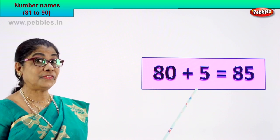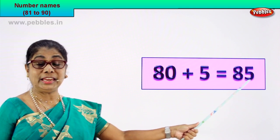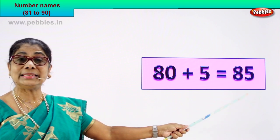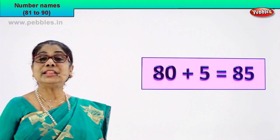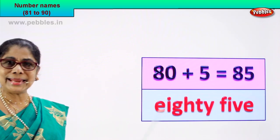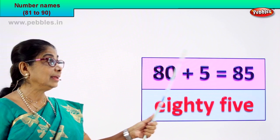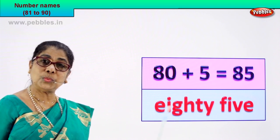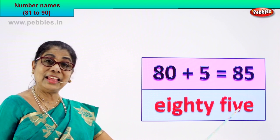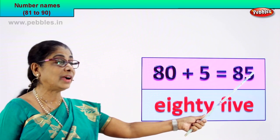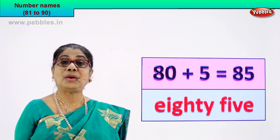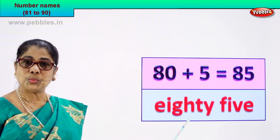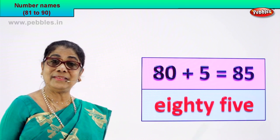80 plus 5 is equal to 85. The numeral 8 and 5, 85. You already know to spell 80 and 5. Eighty — E-I-G-H-T-Y — and five — F-I-V-E. The numeral 85, its name: eighty-five.